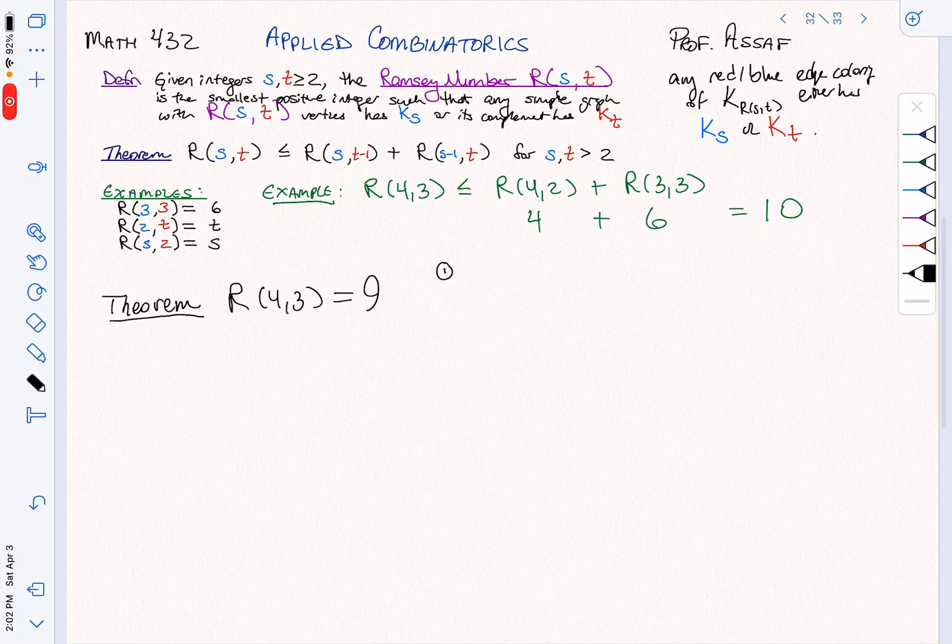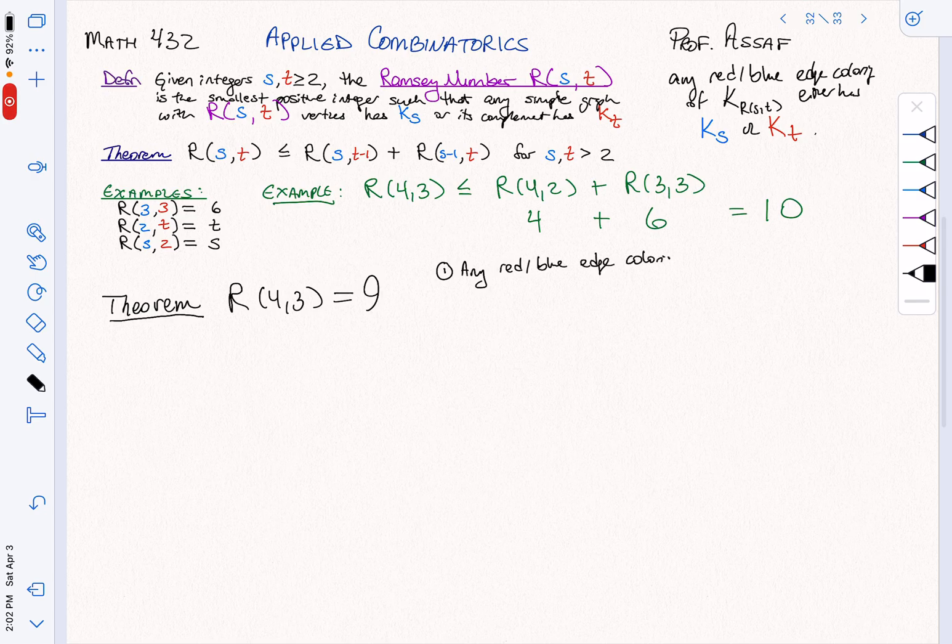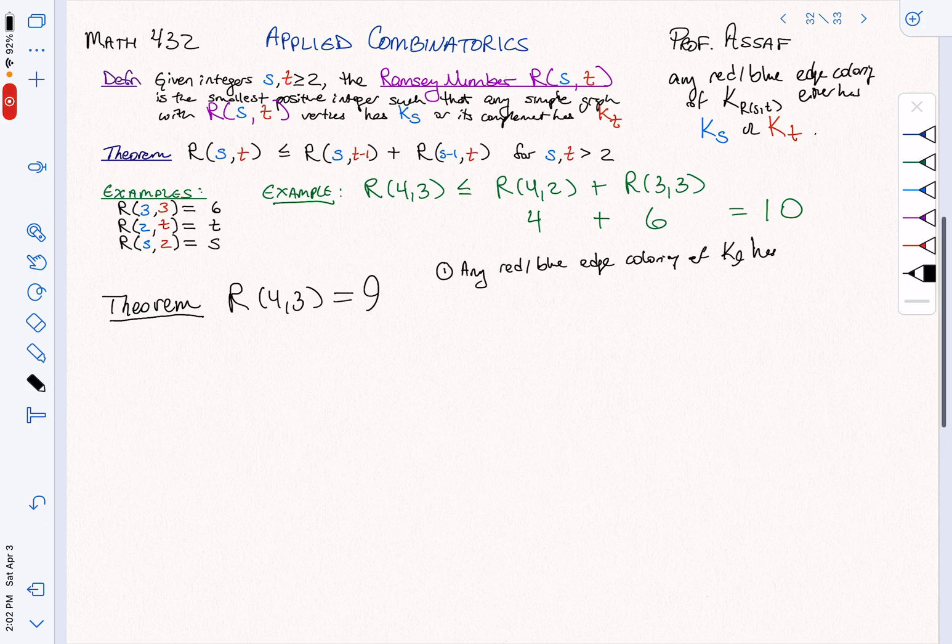There are two things to prove. The first thing we're going to have to prove is that 9 is enough. So what we need to do is we need to show that any red-blue edge coloring of K9 has either K4 or K3.